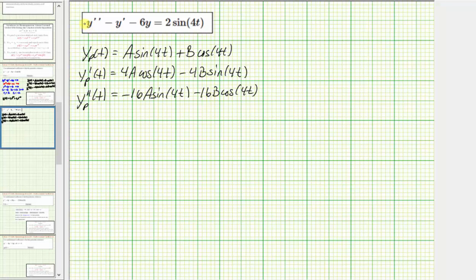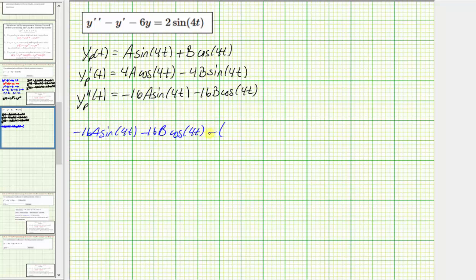Performing substitution, we begin with the second derivative: negative sixteen A sine four t minus sixteen B cosine four t. Then we have minus y prime — we need to be careful here — it's going to be minus the quantity four A cosine four t minus four B sine four t.